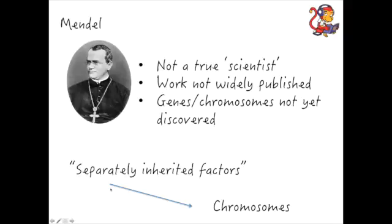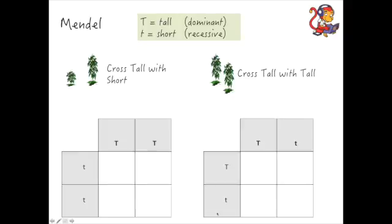We now know that these separately inherited factors are what we call chromosomes, and we can now use genetic crosses to actually see what was going on in Mendel's work. So first of all, let's talk about his first experiment where he crossed a pure tall plant with a short plant.